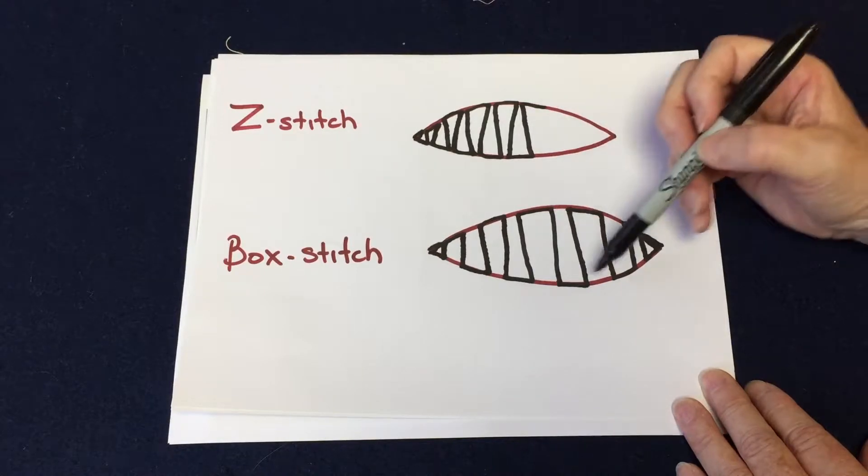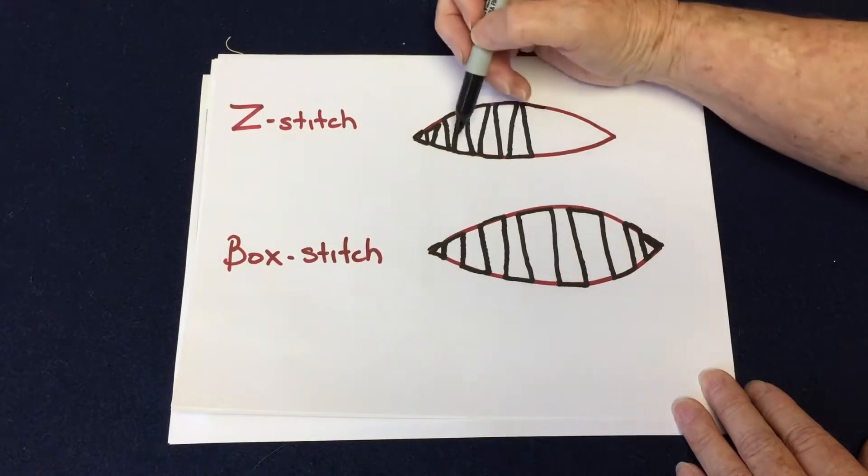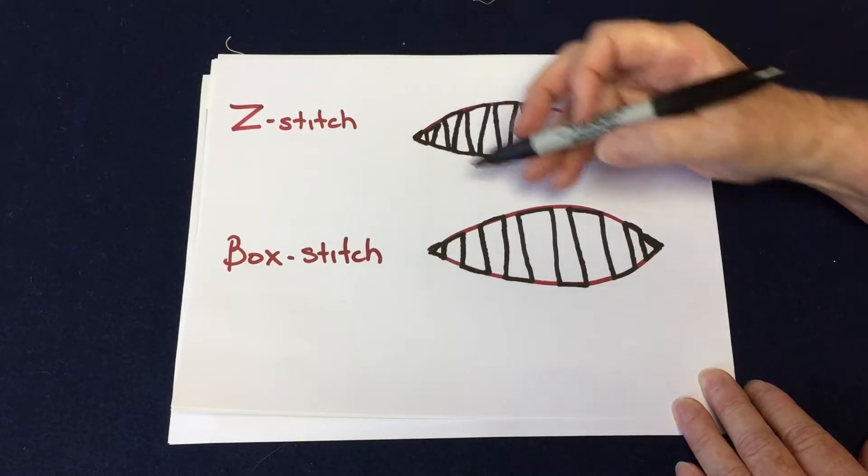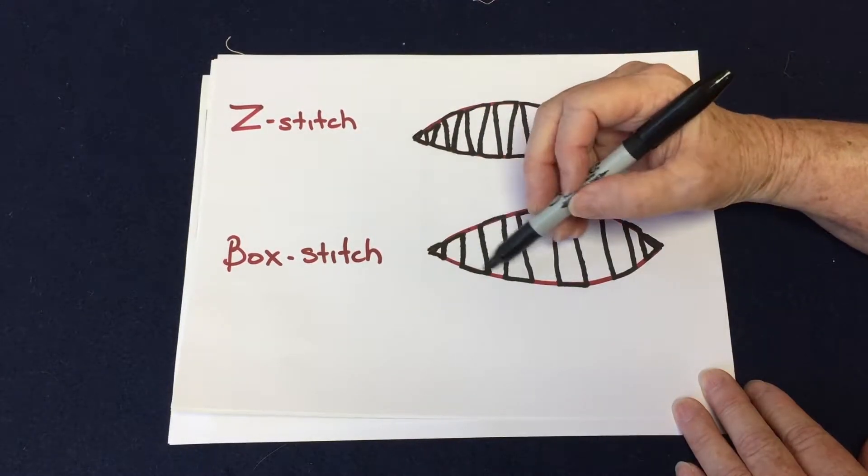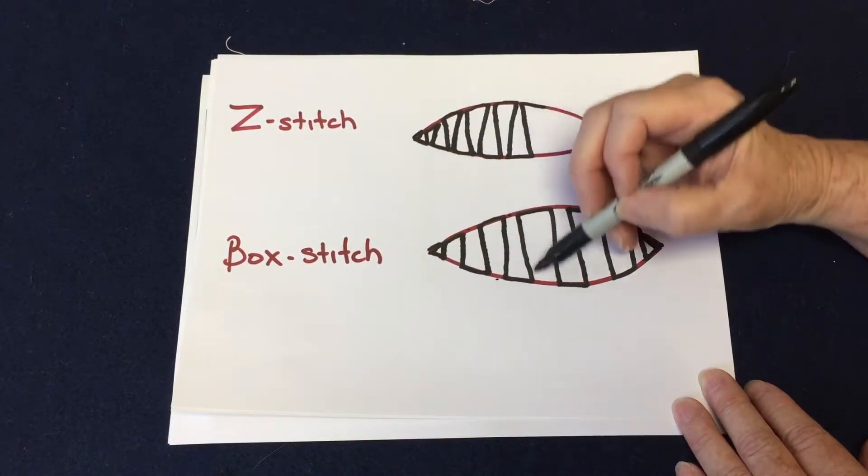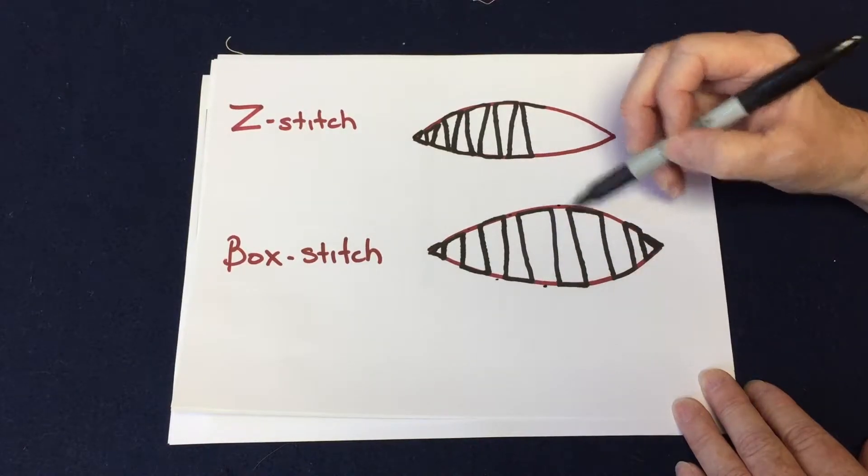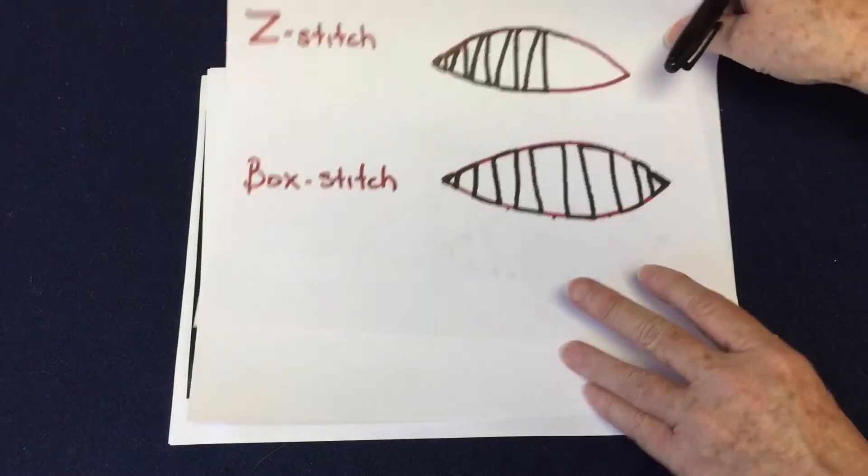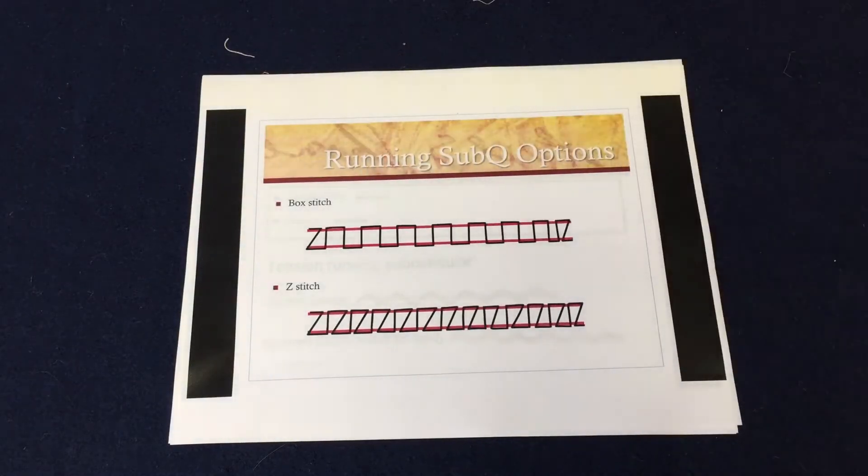So you can see on the Z-stitch that the Z is covered all the way along the edge, you have suture. On the box stitch, you have gaps on the different sides that have no suture to hold it closed, so this is going to be a slightly looser stitch. Now this is what it would look like.